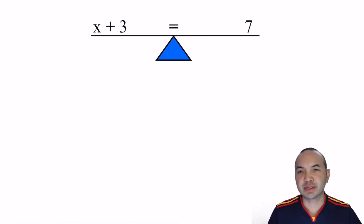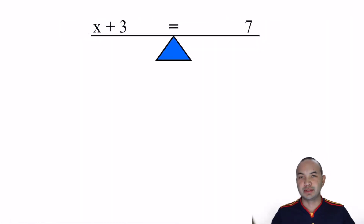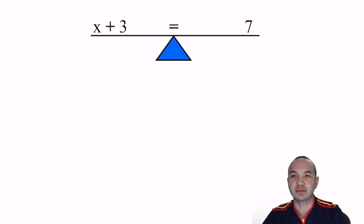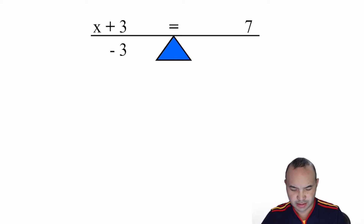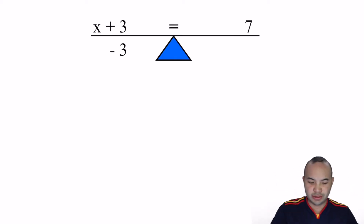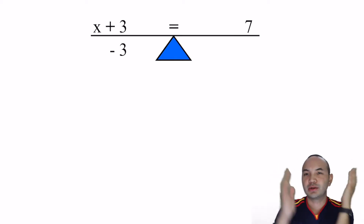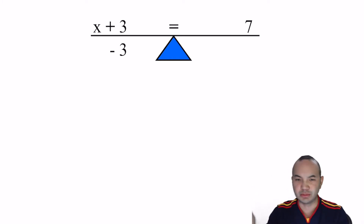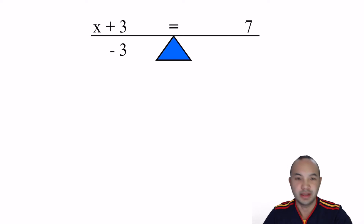Let's take a look at this problem: X plus 3 equals 7. Something plus 3 equals 7 — I don't know what that is. Well, maybe you can already tell, but let's take a look. Right now I don't want that 3 there. I want to know what X equals, not what X plus 3 equals. So if I subtract 3 from there, I'm left with just X on the left side.